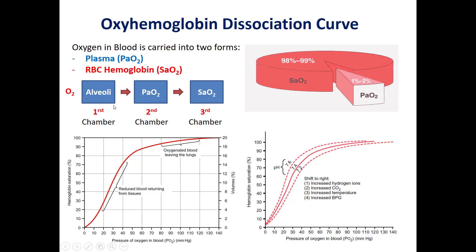So oxygen is transferred and carried to the rest of the organs and tissues through two forms in the blood: through the plasma, and through hemoglobin in the RBC.